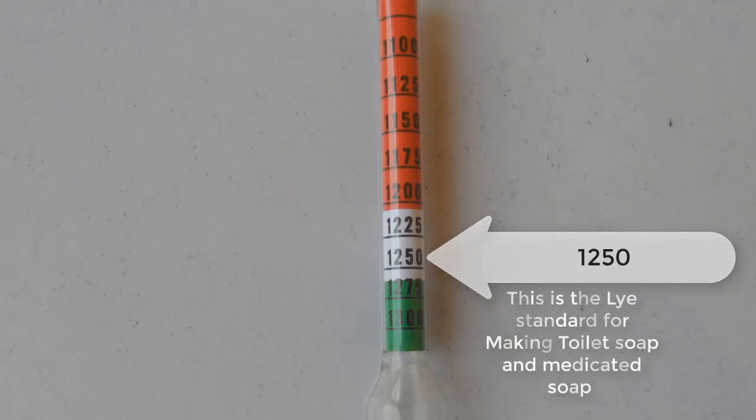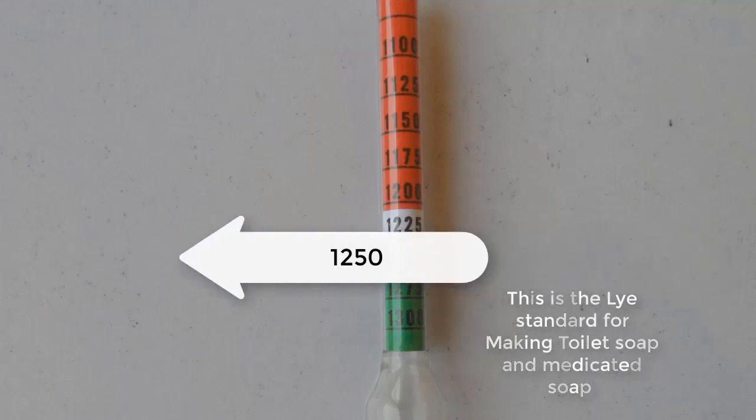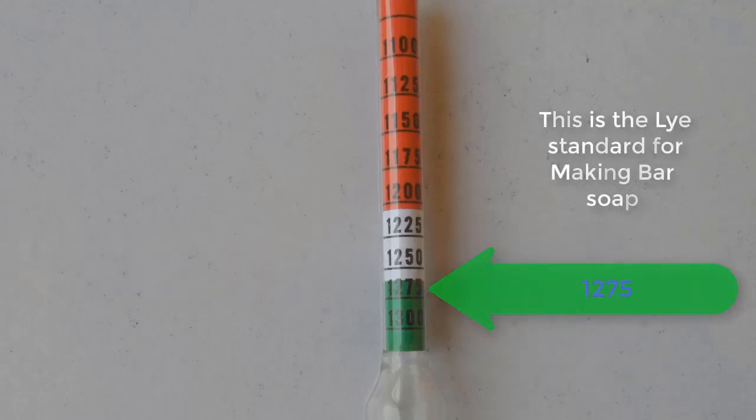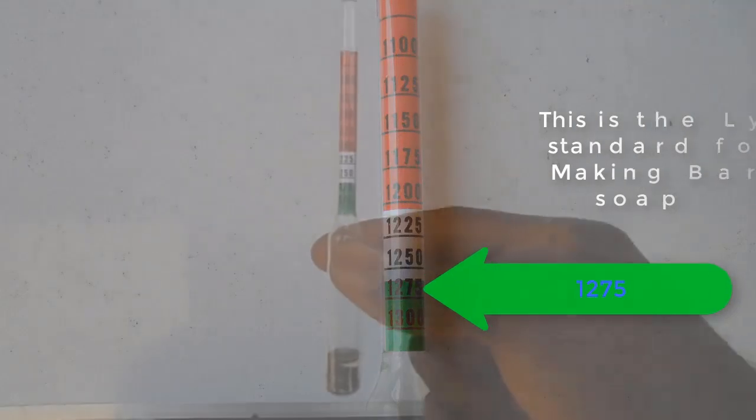But when preparing lye solution for bar soap, the standard reading of the hydrometer should be at the 1275 mark, that is, at the green calibration.